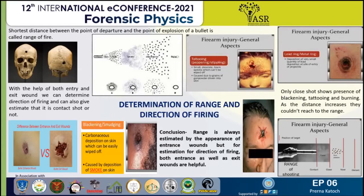In the case of a close shot, burning, blackening, and tattooing are all present — same as in a contact shot. But the difference is that in a contact shot, we also find the muzzle pattern of the weapon. In a near shot, the victim is within the range of tattooing but out of the range of burning. In a distant shot, the victim is beyond the range of both tattooing and burning — everything is essentially absent. This is how we determine range of firing by observing burning, blackening, and tattooing on the entrance wound.